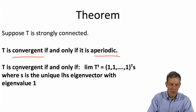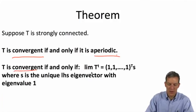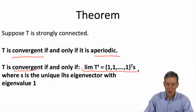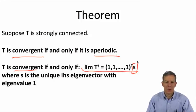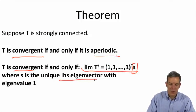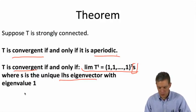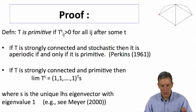and we'll say that this thing is convergent if and only if it's aperiodic, and then moreover, we also get convergence then if and only if the limit looks like each row is based on the eigenvector, which is the left-hand side unit eigenvector that has eigenvalue 1.